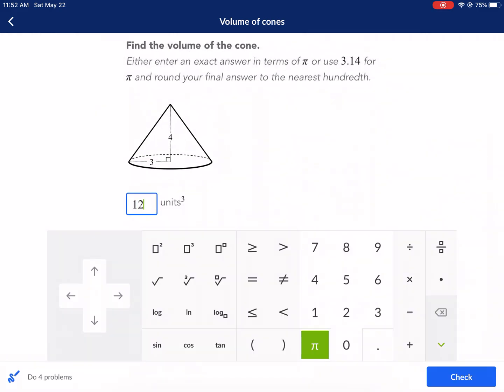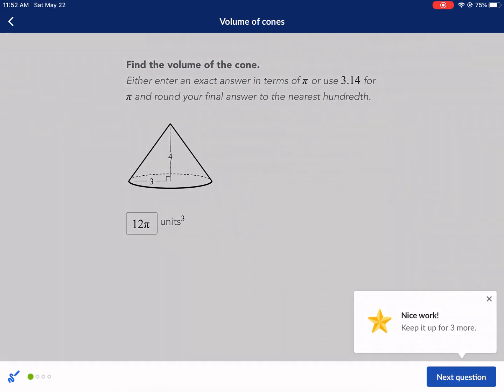So I'm going to go over here. I'm going to type in 12 pi, and it's already in units cubed. Check it. Ready to go on.